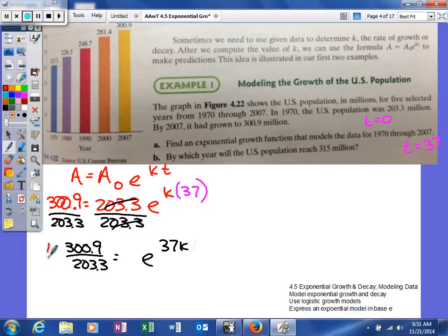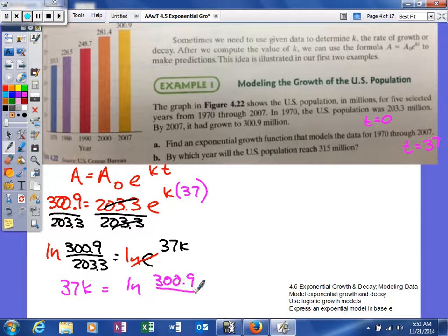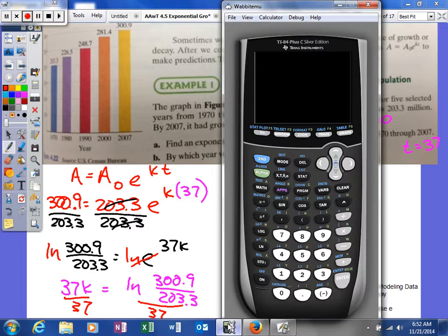So next I'm going to just take the natural log of both sides. That will cancel. So I'll get, I'm going to switch this up to, I'll put 37k equal to the natural log.